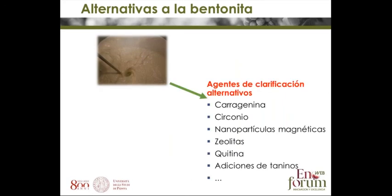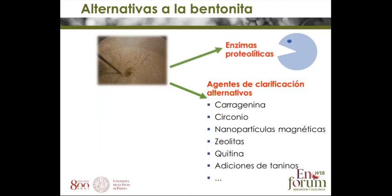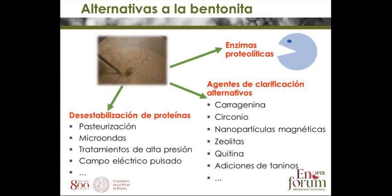Which alternatives have been studied? There are fining agents — carrageenan, zirconia, magnetic nanoparticles, zeolites, chitosan, and others — as well as proteolytic enzymes. And there are processes aimed at destabilizing the proteins, like pasteurization, microwave, high pressure treatment, and pulsed electric field.